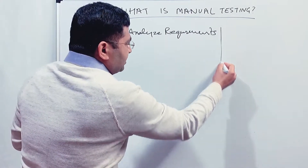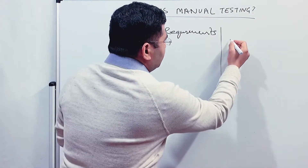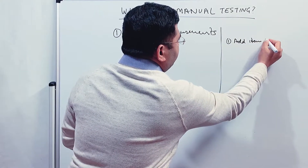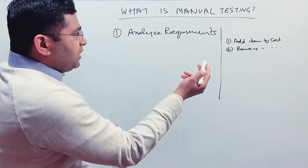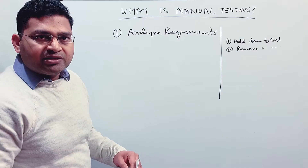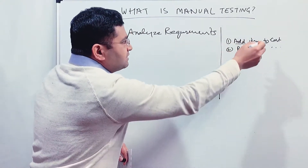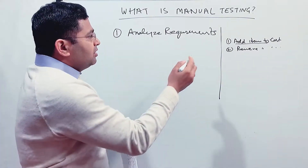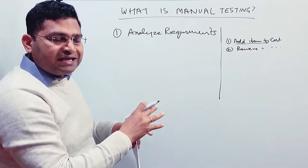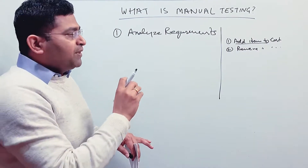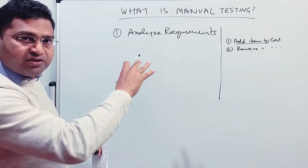For example, with an eCommerce application, requirements could include 'add item to cart' and 'remove item from cart.' When you get a requirement that says build an eCommerce website with the functionality to add item to cart, you go through the documentation, analyze those requirements, and understand what testing you will do. If there are any gaps in the requirement, you provide your feedback to the team and the business. Analyzing requirements is a very important first phase of manual testing.